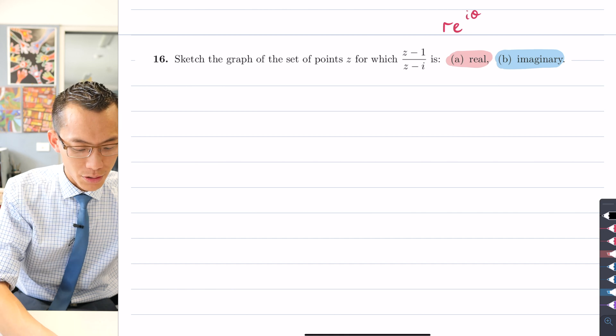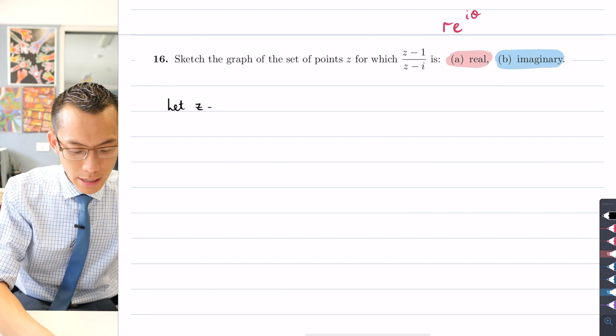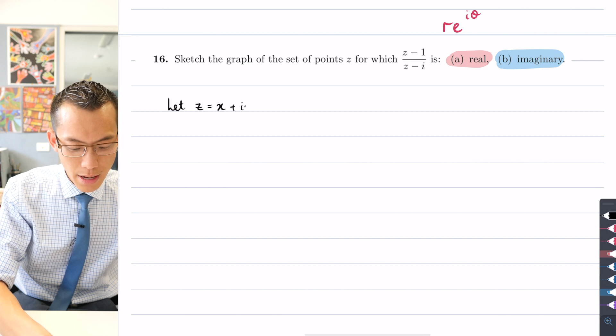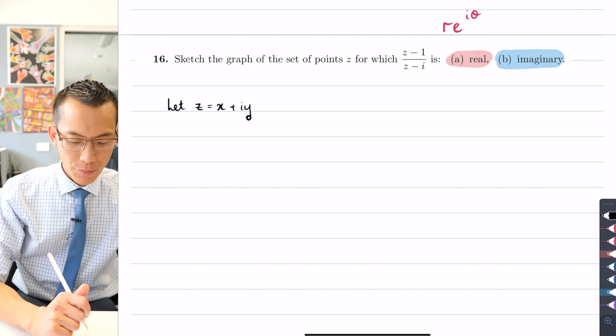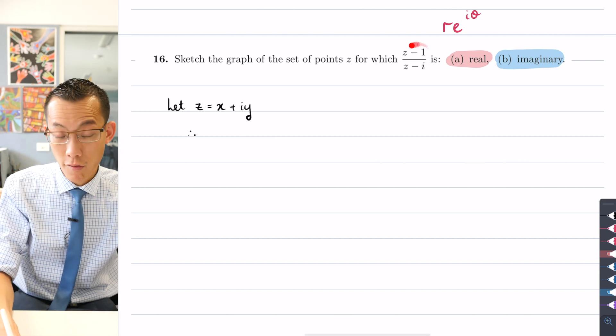So with that in mind, what I'm going to do is I'm going to say well let's take this complex number z and express it in Cartesian form, so I'm just going to say it's x plus iy.